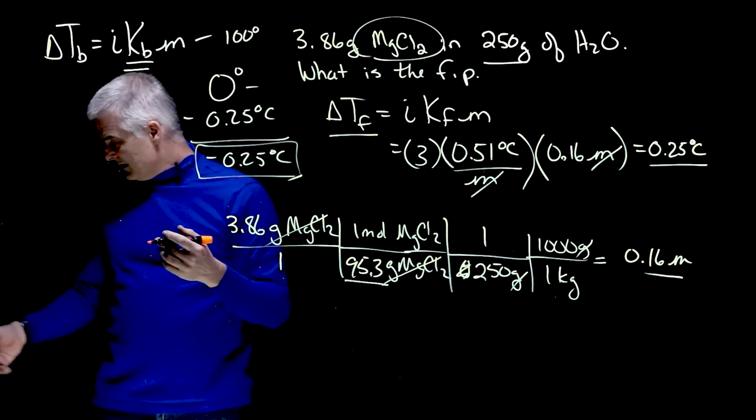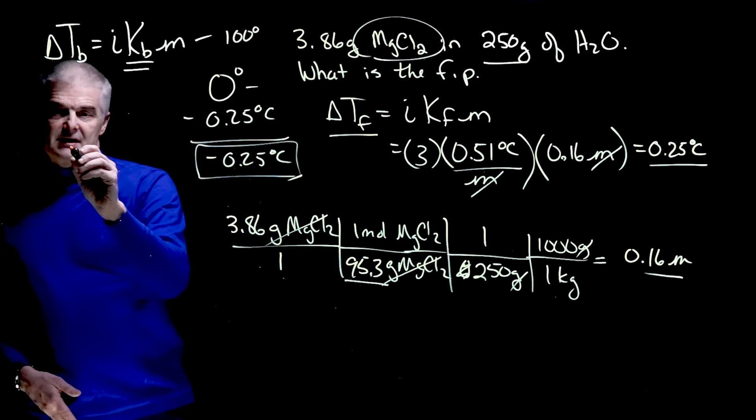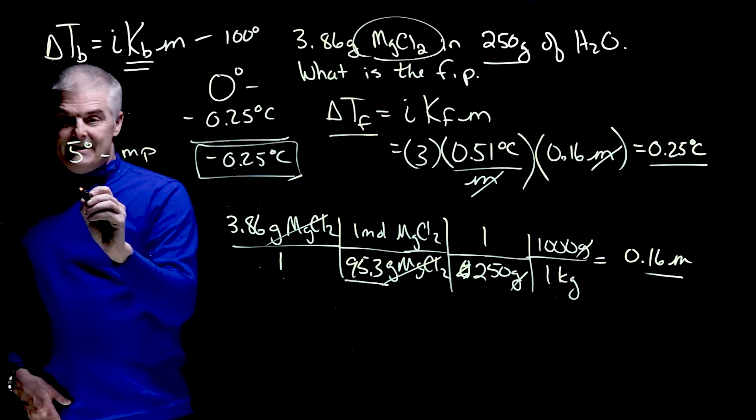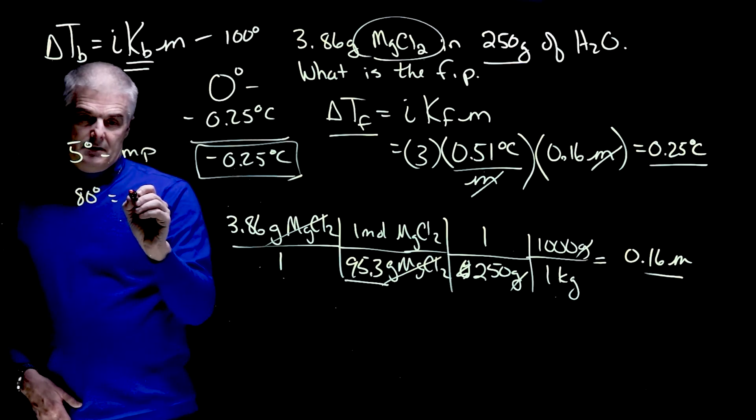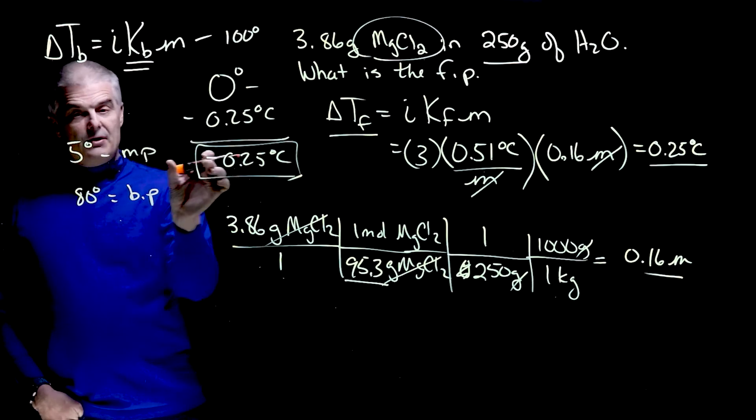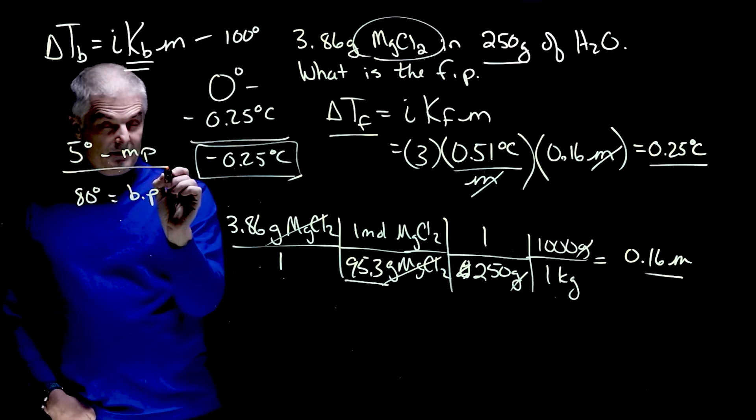I've got an example here. The regular melting point of benzene is like 5 degrees. That's its melting point. And its boiling point is 80 degrees. If I had gotten 0.25, I would then subtract that from 5 because this is the regular melting point of it.